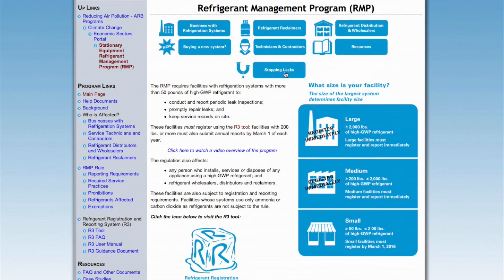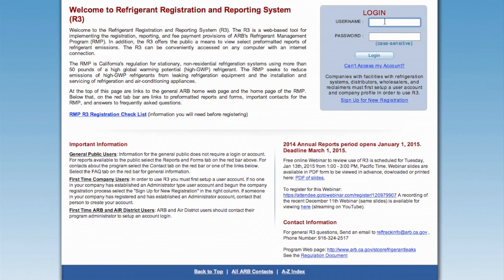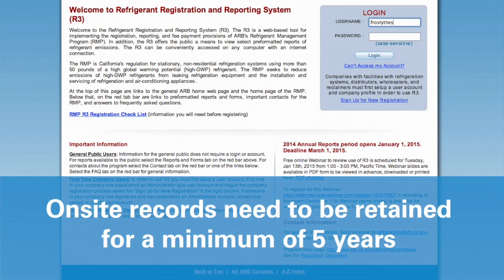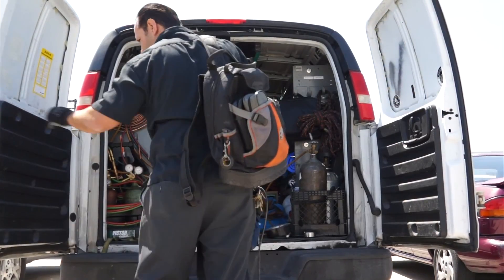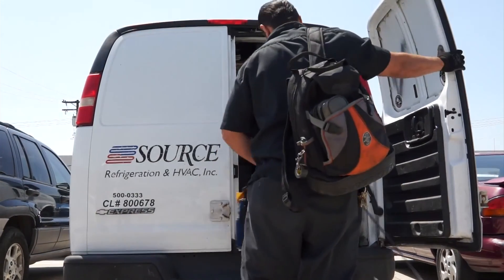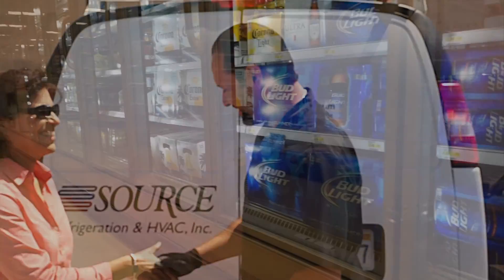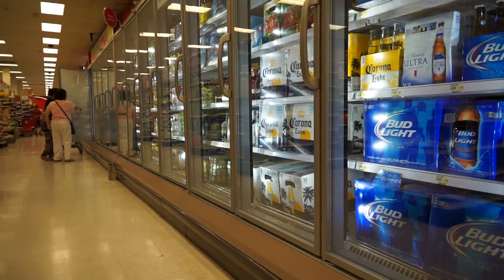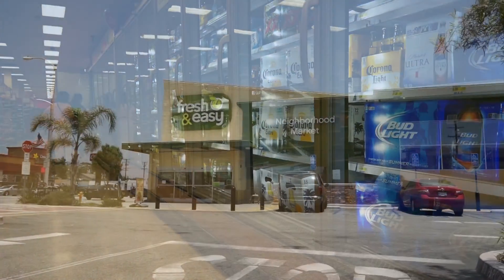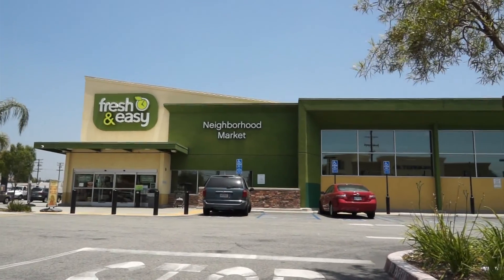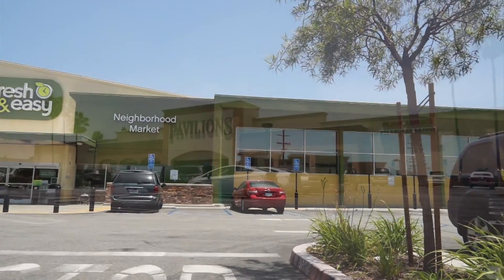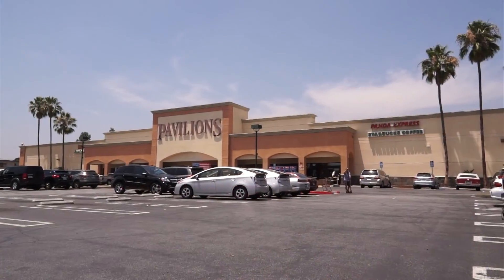To complete the leak inspection, maintain proper records and be sure to input the results into the California R3 database annually. Remember that on-site records need to be retained for a minimum of five years. While not required by law, it is recommended that leak checks be performed by an EPA-certified technician. Thank you for doing your part to help reduce the impact of greenhouse gases on the environment by preventing leaks. In the long run, you will be reducing costs through early detection.